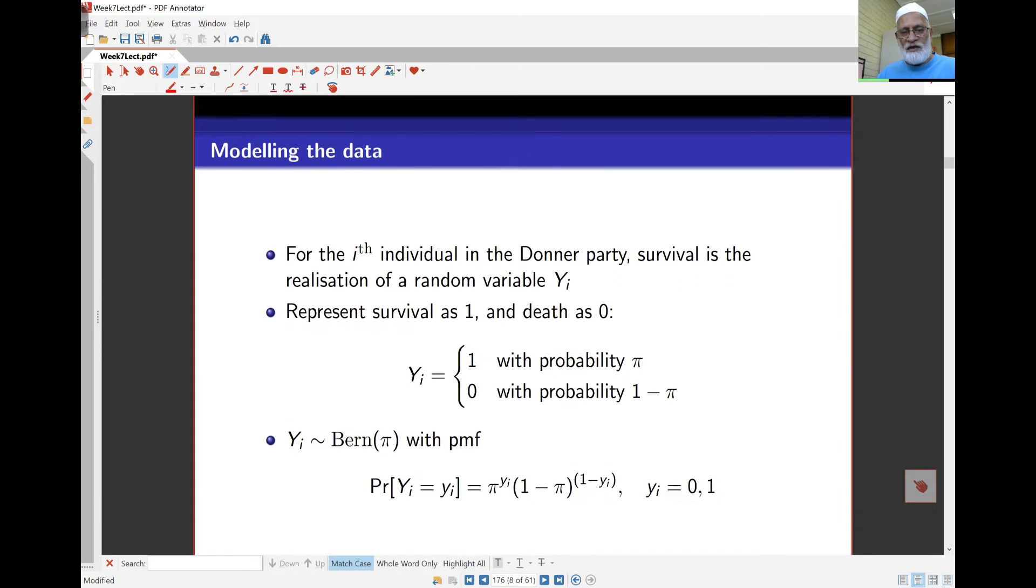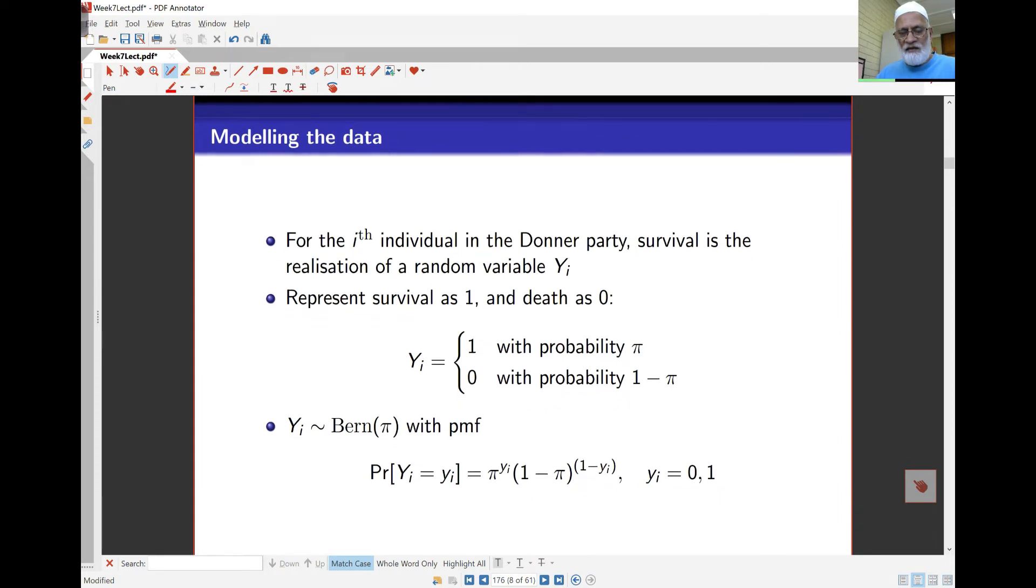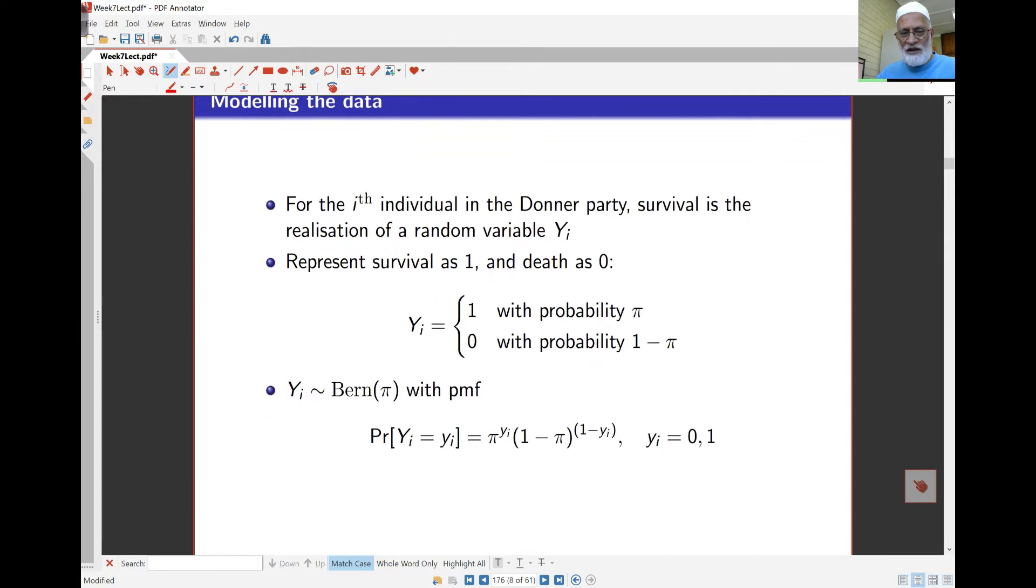The model for the data here: if i represents the i-th individual and the status of survival is indicated by variable yi, then yi is 1 with probability πi (the person has survived) and 0 with probability 1 - πi (the person has died). So yi is Bernoulli, and the probability mass function is: probability of survival is πi, so it's πi^yi times (1 - πi)^(1 - yi).